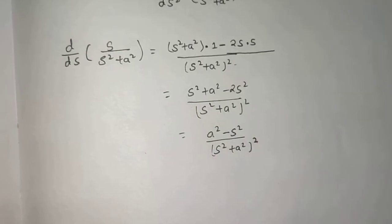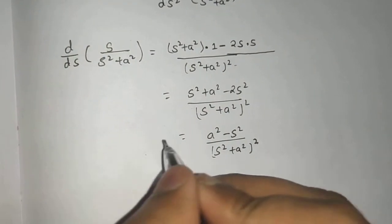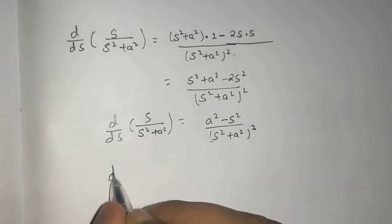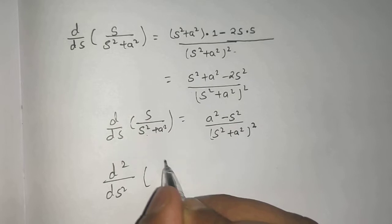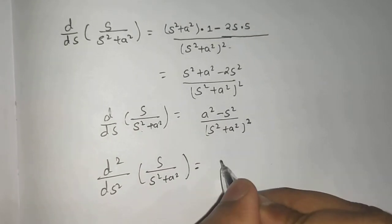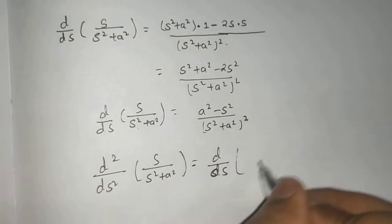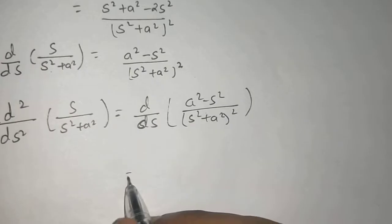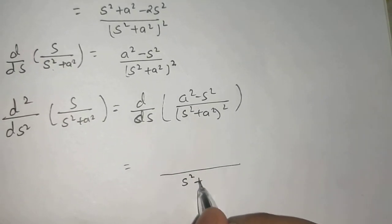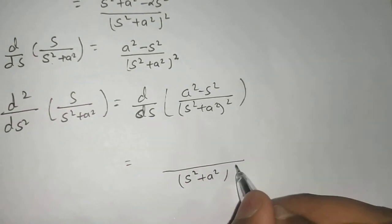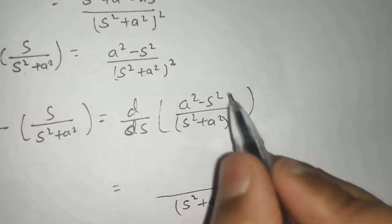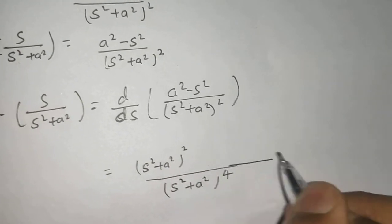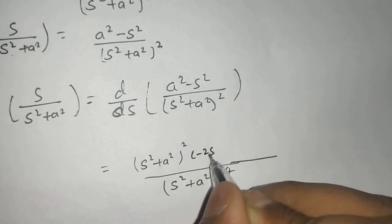Now we differentiate again. The first derivative of s/(s²+a²) was (a²−s²)/(s²+a²)², so d²/ds² of s/(s²+a²) is the derivative of (a²−s²)/(s²+a²)². Using the quotient rule again — the denominator becomes (s²+a²)⁴. The derivative of (a²−s²) is −2s, and the minus sign comes in the middle.